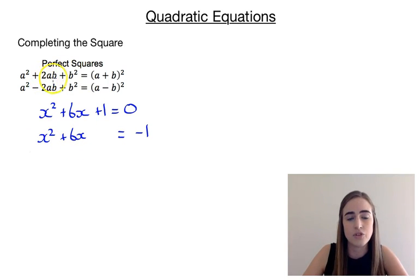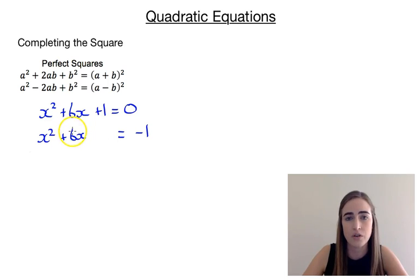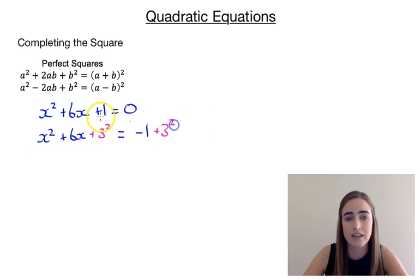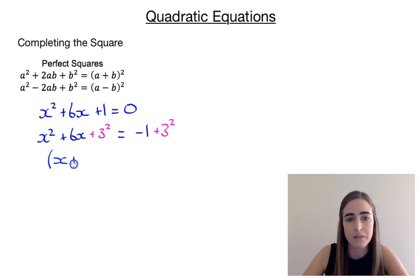Now we need to figure out what constant we're going to add to make the left-hand side a perfect square. This middle term is 2ab, so it's 2 times x times b. To figure out what b is, we halve the coefficient: half of 6 is 3. So we're going to add 3 squared to both sides to keep the equation balanced. We can then factorise the left-hand side to x plus 3 all squared, and 3 squared is 9, so minus 1 plus 9 gives 8 on the right.